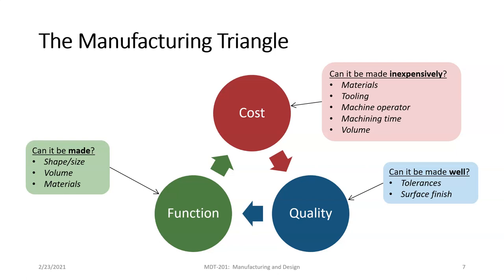Moving on to part quality: can it be made well? That comes down to whether it can meet the tolerancing requirements. Think of casting versus forging versus machining — those are three different levels of tolerance capabilities. Casting is probably the least precise operation. Machining, of those three, is probably the most precise. In fact, machining of all production processes is probably the single most precise process we could use. So we must ask: can we meet the tolerancing requirements and can we produce the surface finish we want?